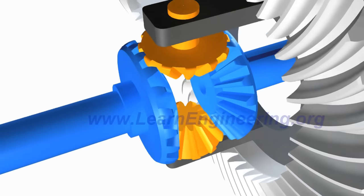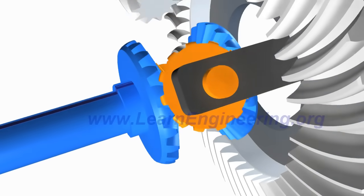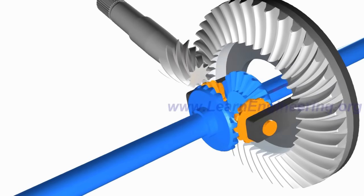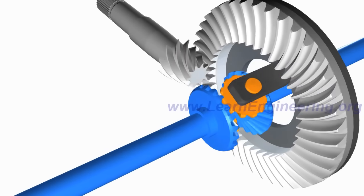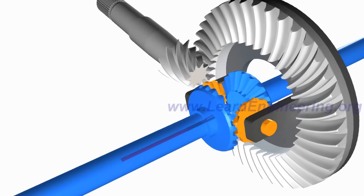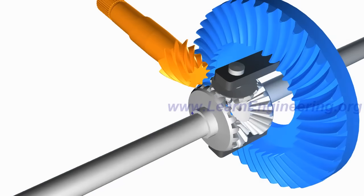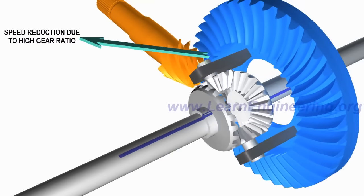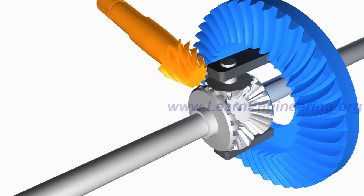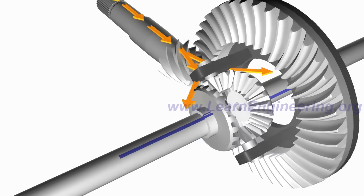Apart from allowing wheels to rotate at different RPM, the differential has two more functions. The first is speed reduction at the pinion and ring gear assembly, which results in torque multiplication. The other function is to turn the power flow direction by 90 degrees.